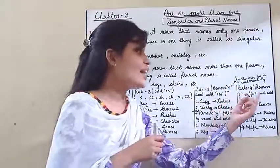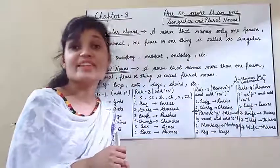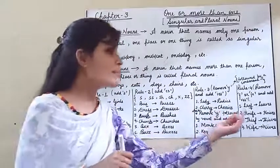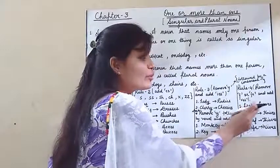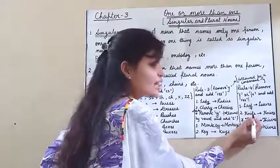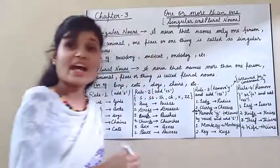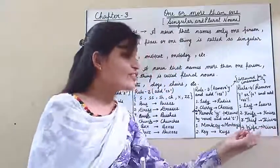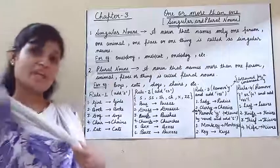The next rule: Remove F or FE and add VES. जब singular noun के last में F या FE आता है तो हम उसको remove करके VES add कर देते हैं. For example: 'leaf' — last letter is F, so we remove it and add VES — 'leaves.' 'Knife' — last letters are FE, so we remove FE and add VES — 'knives.' Similarly: thief → thieves, wife → wives.